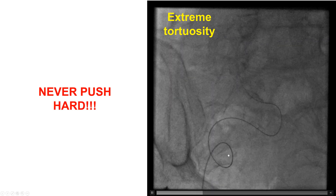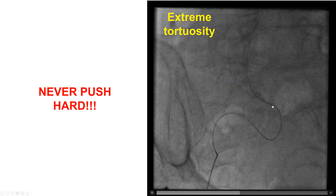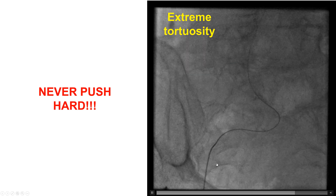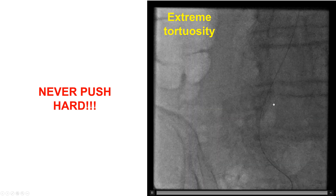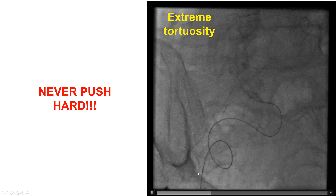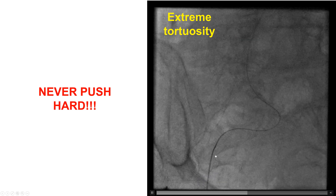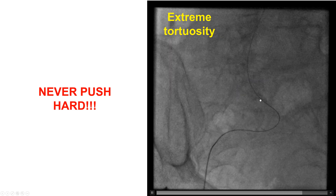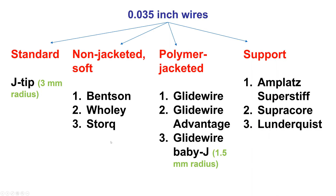This is an example of extreme tortuosity that makes advancement of the guide wire difficult. However, once there is some portion of the guide wire through that area of tortuosity, quite often there is some straightening of the tortuosity, which makes it easier to advance equipment subsequently.